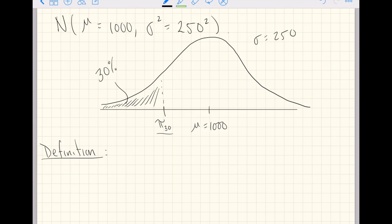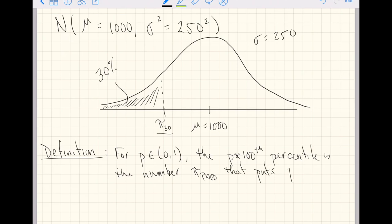So we have for p in 0 to 1 for some probability, the 30th, whoops, let's generalize this, the p times 100th percentile is the number π subscript p, I guess we'll write a decimal π subscript p times 100, that puts π times 100% of the area to the left of π subscript p.